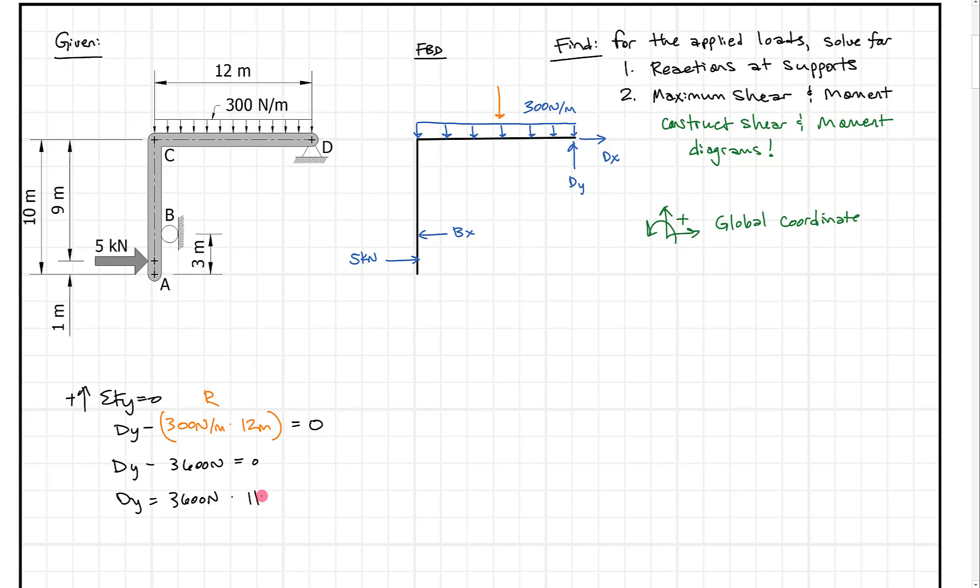Dy equals 3600 newtons. I like to convert this to kilonewtons, one kilonewton per 1000 newtons, so Dy equals 3.6 kilonewtons. When you have units in kilonewtons and meters, you want to get them consistent. One equation, one solution. That's a good start.